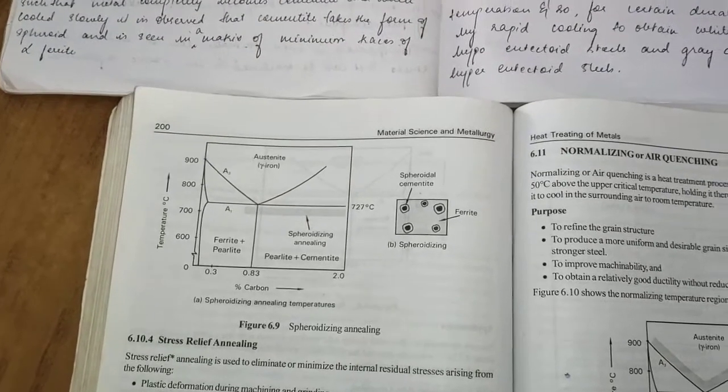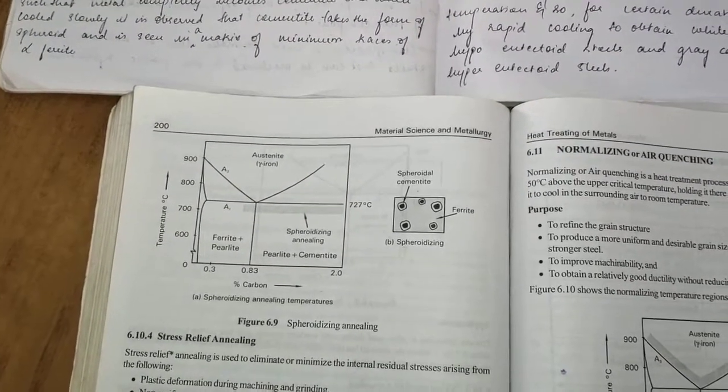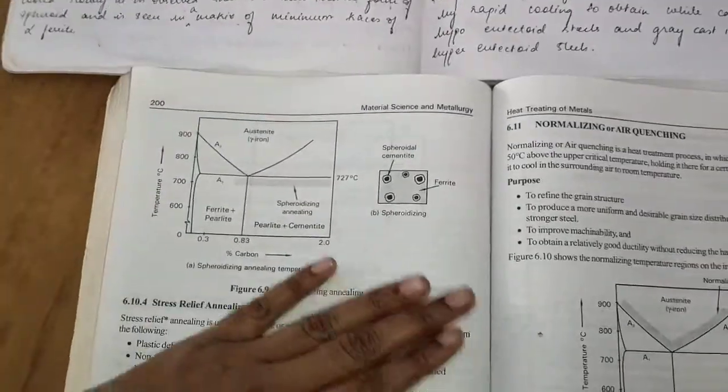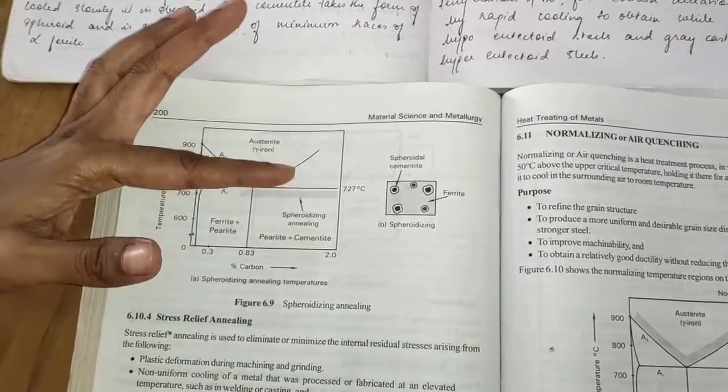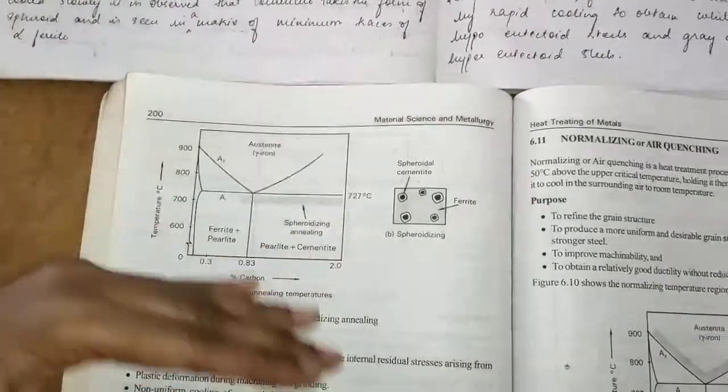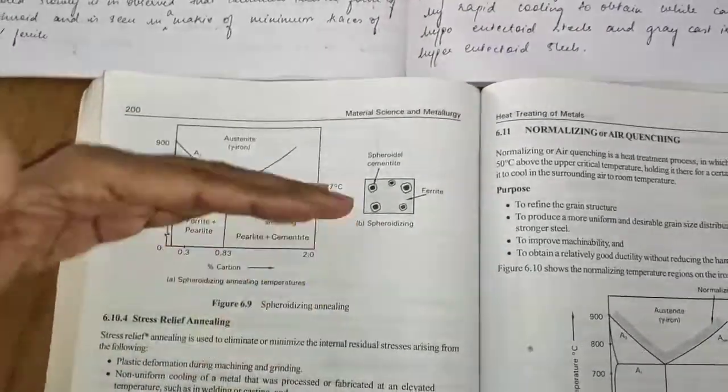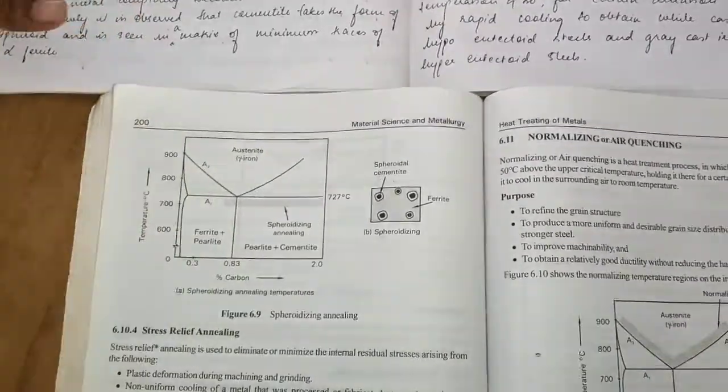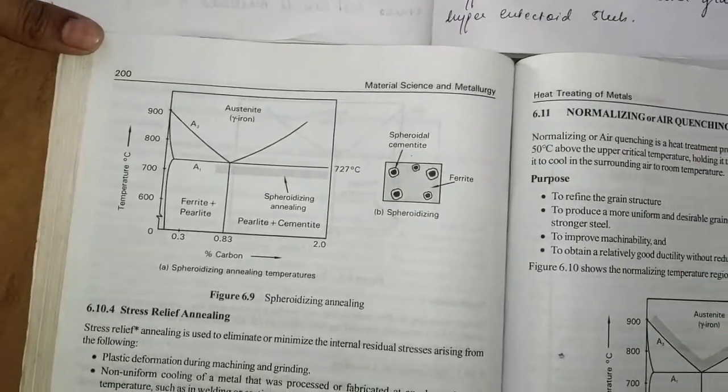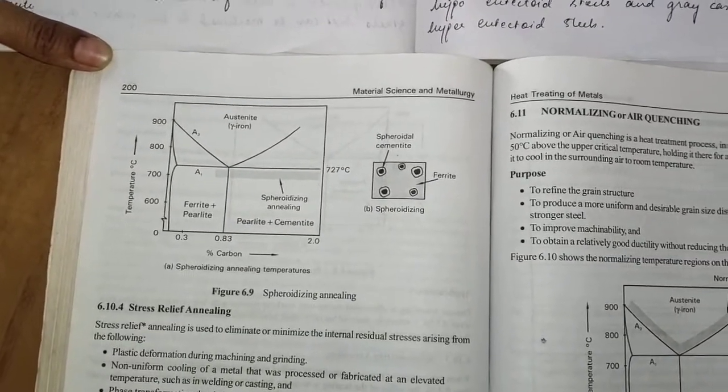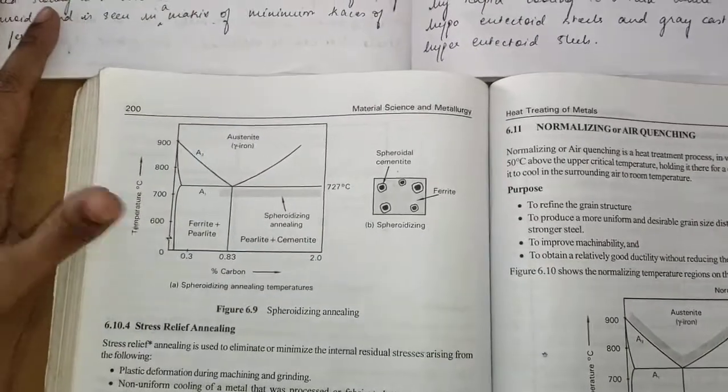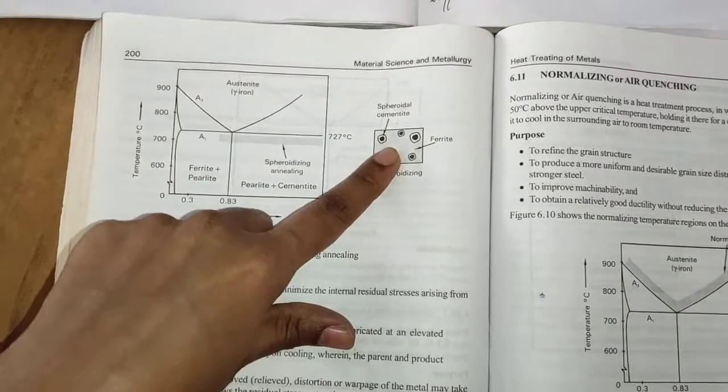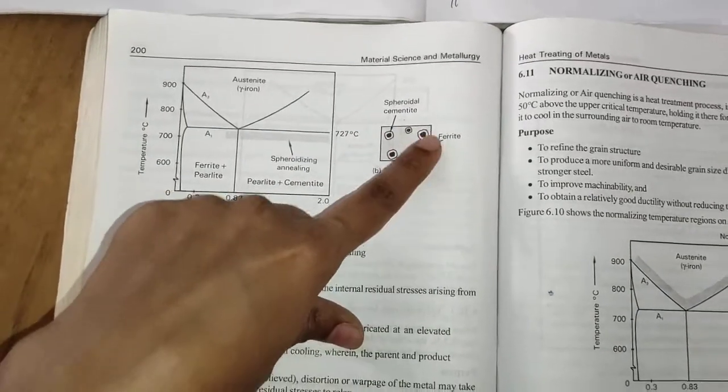The effect of heating will cause the cementite phase—it is of course continuation of process annealing, so it's carried out below 727 degree Celsius. The effect of that heating will cause that cementite phase to assume a globular or spherical shape. As you can see, this is all the cementite phase.